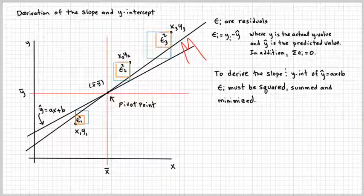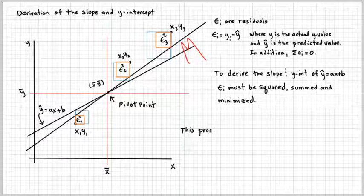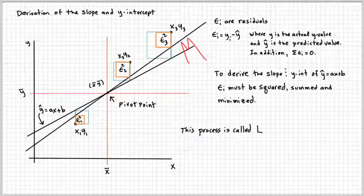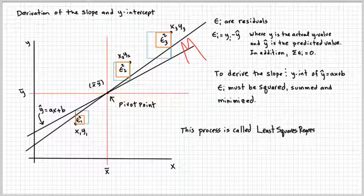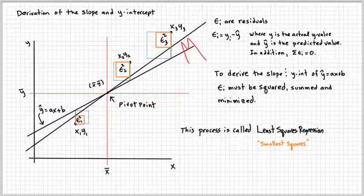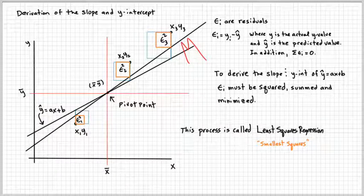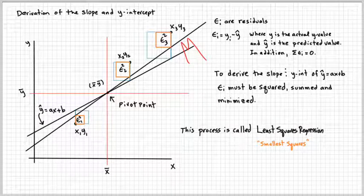And so somewhere, somehow through the math, you can minimize the boxes. The minimization comes through the math, of course. And this is why the process is called least squares regression, because you're creating boxes, the smallest boxes, the smallest boxes that you can create and still have a straight line through the pivot point.